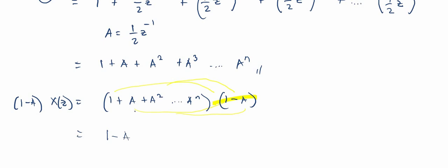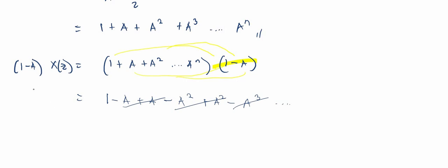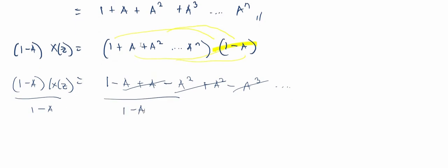The terms cancel in a telescoping fashion: a minus a is zero, a squared minus a squared is zero, and so on continuing to infinity. You will notice that everything cancels out, retaining only the number one. So we divide both sides by (1 - a).